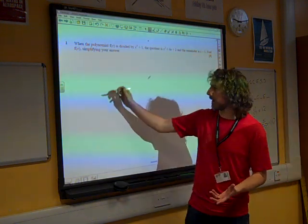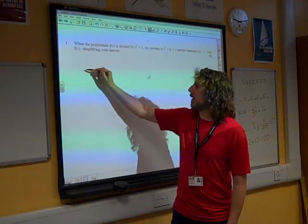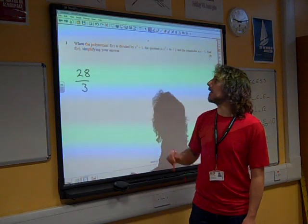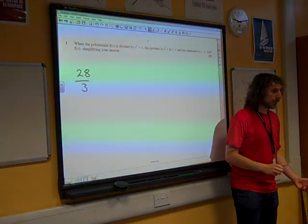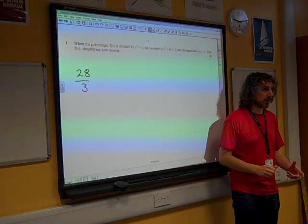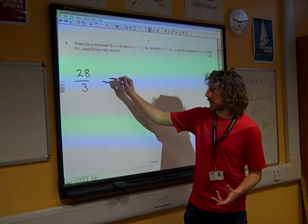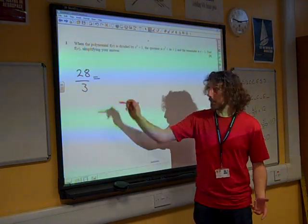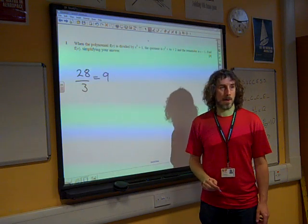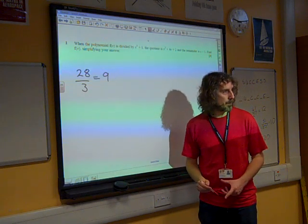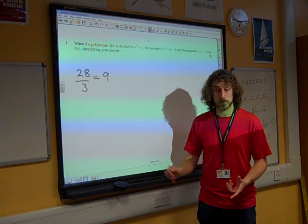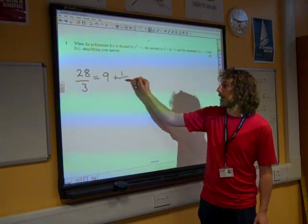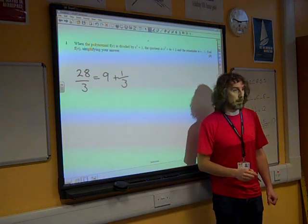If we do something like the number 28 divided by 3, then what we get is a quotient and remainder. We get a quotient, a whole amount that would be 9, and we get a remainder of 1. So that's one-third that we've got as a remainder. So it might be written like that.